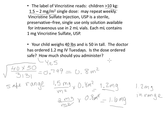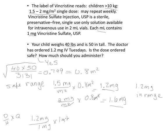Second question: how much should you administer? This can be done by nursing formula, dimensional analysis, or proportion. I'm going to use the nursing formula — desired over have, times the quantity. I desire to give what the doctor ordered, which is 1.2 milligrams. I have on hand 1 milligram per 1 milliliter, so I divide by 1 milligram and multiply by 1 milliliter, and I should give the child 1.2 milliliters.